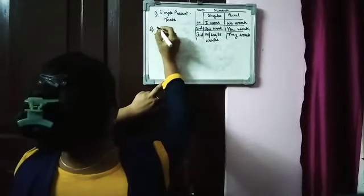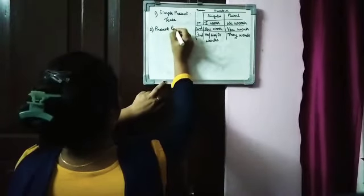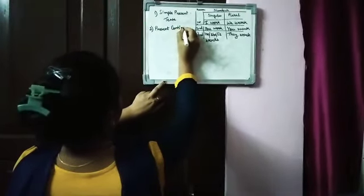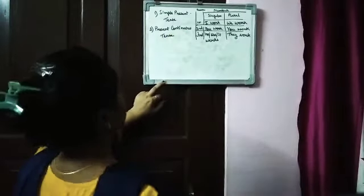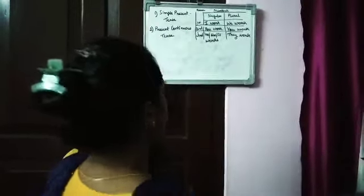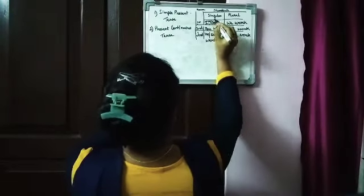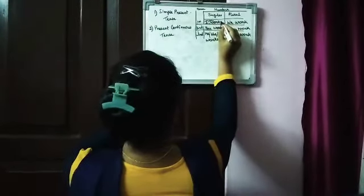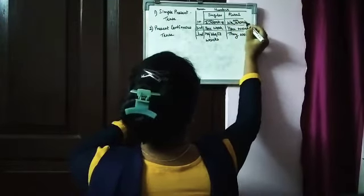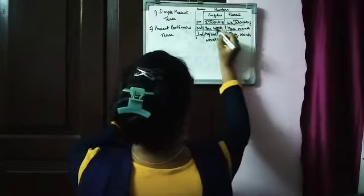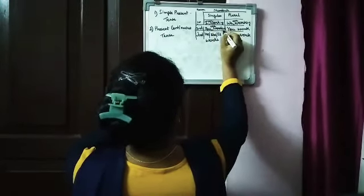Now we will do present continuous tense. What we are supposed to do - we will put here the auxiliary verb. I am working, we are working, you are working.